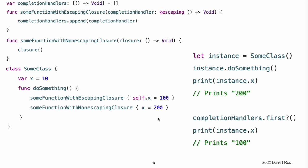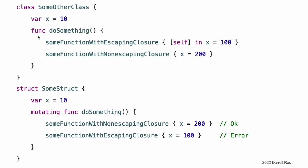For example, in this code the closure passed to someFunctionWithEscapingClosure refers to self explicitly. In contrast, the closure passed to someFunctionWithNonescapingClosure is a non-escaping closure, which means it can refer to self implicitly. Here is a version of doSomething that captures self by including it in the closure's capture list and then refers to self implicitly. If self is an instance of a structure or an enumeration, you can always refer to self implicitly. However, an escaping closure cannot capture a mutable reference to self when self is an instance of a structure or an enumeration. Structures and enumerations do not allow shared mutability, as discussed in Structures and Enumerations Are Value Types. The call to someFunctionWithEscapingClosure in this example is an error because it is inside a mutating method, so self is mutable. That violates the rule that escaping closures cannot capture a mutable reference to self for structures.